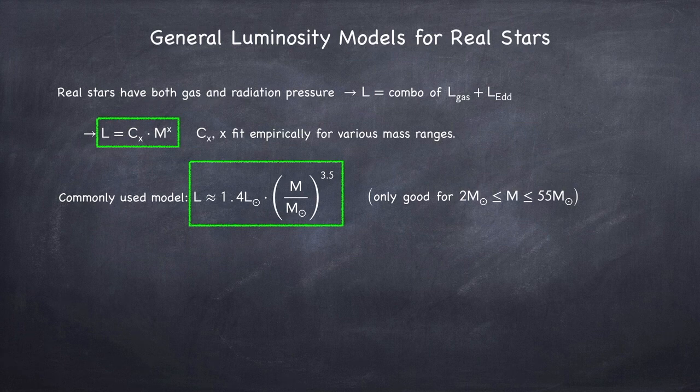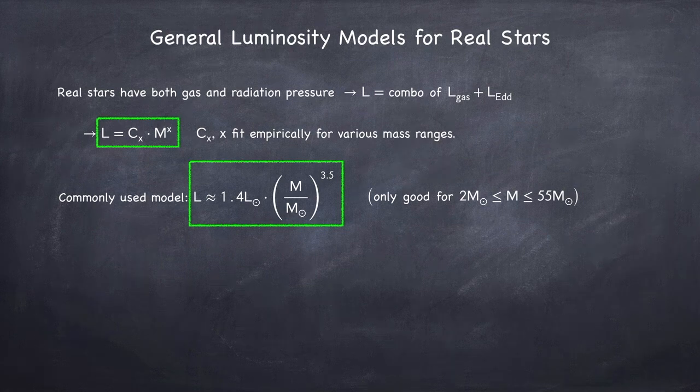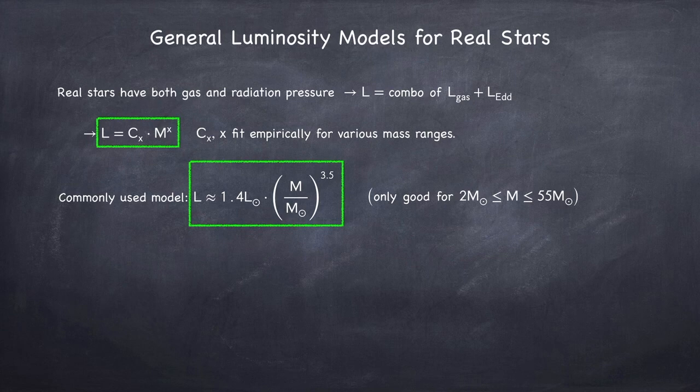This model only holds for a mass range between about 2 solar masses to 55 solar masses. So as you can see, this doesn't hold for the sun, because if we plugged in one solar mass into this equation, we would be off by a factor of 1.4.